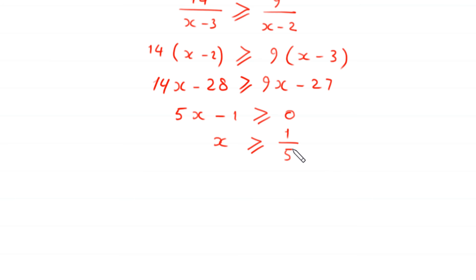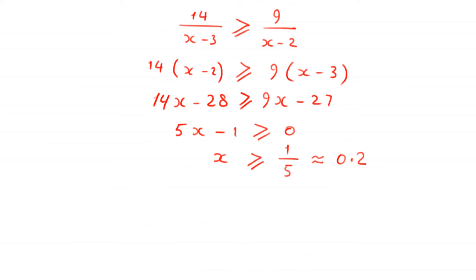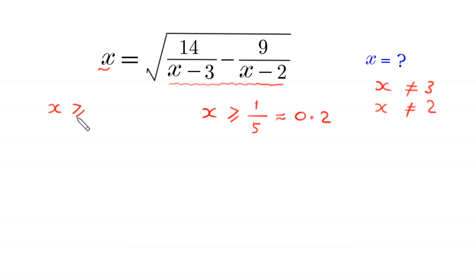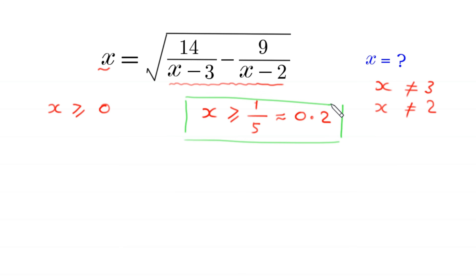This implies that x must be greater than or equal to 1/5. Since 1/5 is approximately equal to 0.2, and combining with the domain restrictions x ≠ 3 and x ≠ 2, we conclude that x must be greater than or equal to 1/5. Now let's continue by squaring both sides.